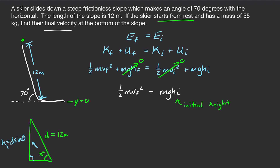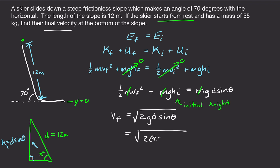Plugging that all in and going back to our equation: mass cancels from both terms. Solving for final velocity: v final equals the square root of 2gh, but instead of h we write D sine theta. So it's the square root of 2 times 9.8 meters per second squared times 12 meters times sine of 70 degrees. Plugging that in, we get a final velocity of 14.9 meters per second.